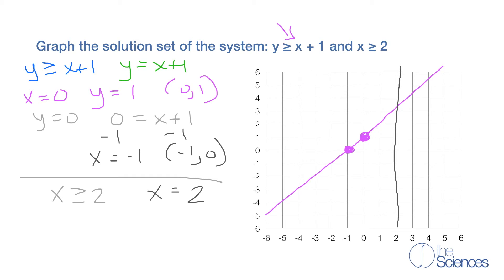The solution set of the system is the part where it overlaps — the intersection of the two half planes. Since x is greater than or equal to 2 and y is greater than or equal to x plus 1, it's going to be our positive overlap. So it's going to be this area. That's the solution set of the system.